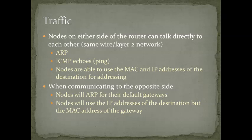The traffic on the network is pretty straightforward. Hopefully by this point, if you're looking at this for IPv6, you have a pretty good handle on IPv4 traffic. Nodes on either side of the router can talk directly to each other — meaning they're on the same wire or the same Layer 2 network. Hosts 1.1, 1.2, and the router 1.254 can talk directly to each other. This means they can ARP for each other and send ICMP echoes as we might see from ping. When nodes send traffic to each other, the frames will use the MAC addresses and IP addresses of the destination, and the source addressing would be the MAC and IP of the source.